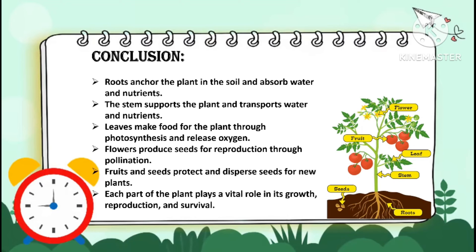Flowers produce seeds for reproduction through pollination. Fruits and seeds protect and disperse seeds for new plants. Each part of the plant plays a vital role in its growth, reproduction, and survival.